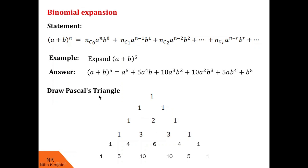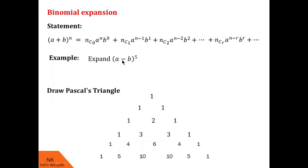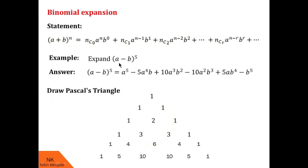I hope you understood how to use Pascal's triangle in the expansion of (a+b)^n. One last important thing: how to deal with a minus sign when expanding (a−b)^n. You expand it the same way as (a+b)^n, but you simply place alternating minus signs on each term. For example, using the expansion of (a+b)^5: the first term gets a plus sign, the second gets minus, the third gets plus, the fourth minus, the fifth plus, and the sixth minus.